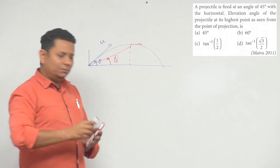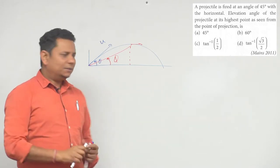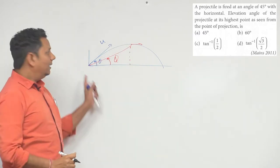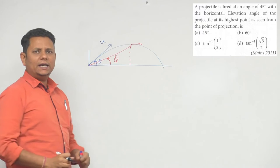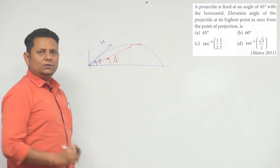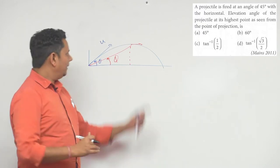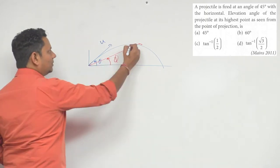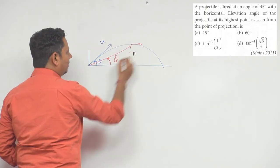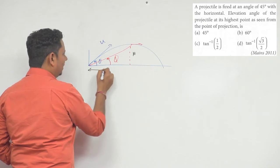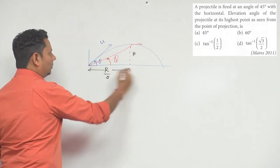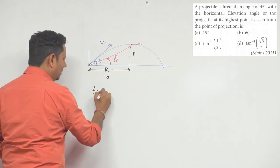The question is simple but we need to understand it. When we launch this projectile, its initial velocity u has two components: u cos theta and u sin theta. Here the projectile reaches maximum height h and this distance will be R/2. We will analyze this triangle.